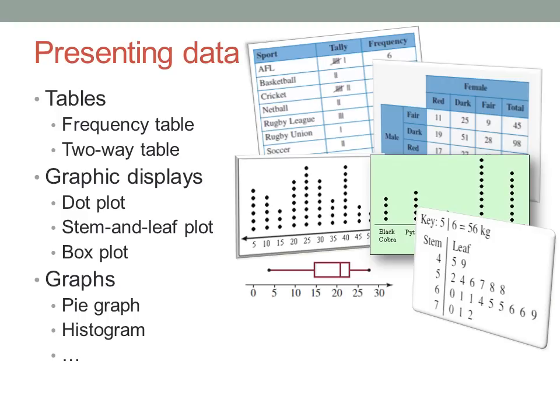The line in the middle of the box is the median, the edges of the box are the lower and upper quartiles, and the ends of the whiskers are the minimum and maximum values in the dataset.